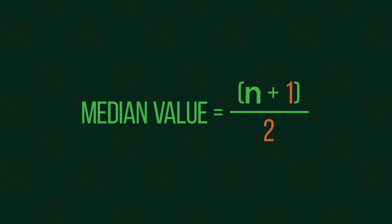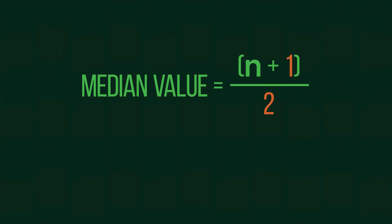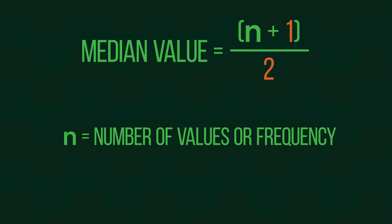Take the number of values, also called frequency, and call it n. We add one to this value, then half it. Our answer is the position of the median value.